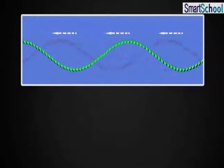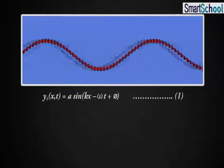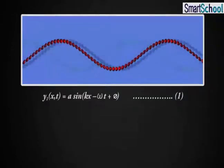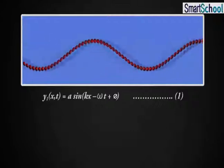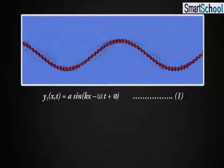The equation of the wave will be y₁(x,t) is equal to a sin(kx - ωt + φ). Let it be equation 1.